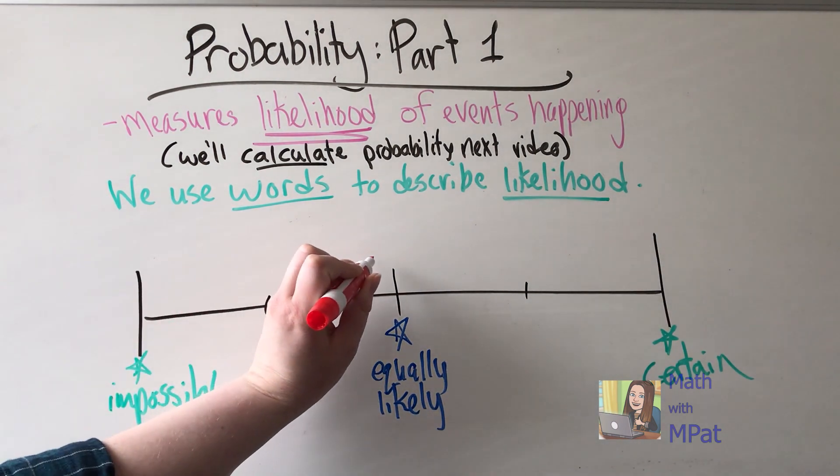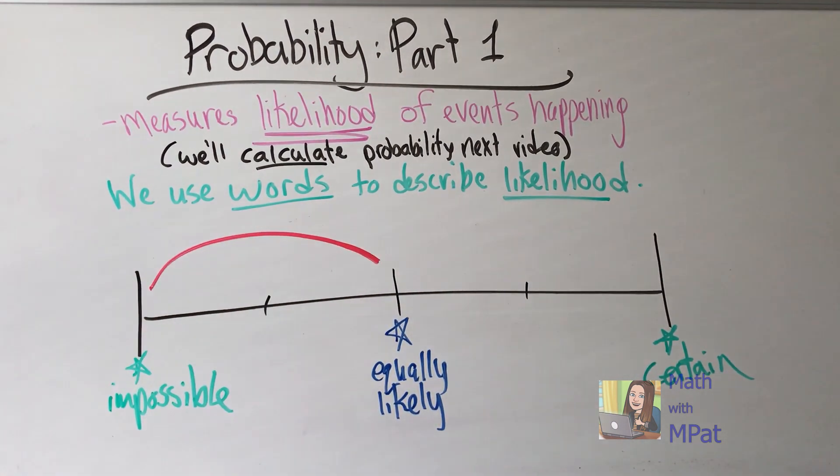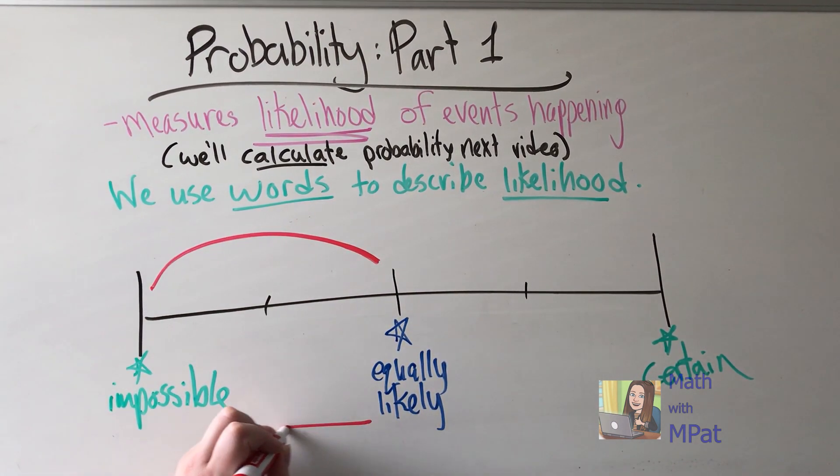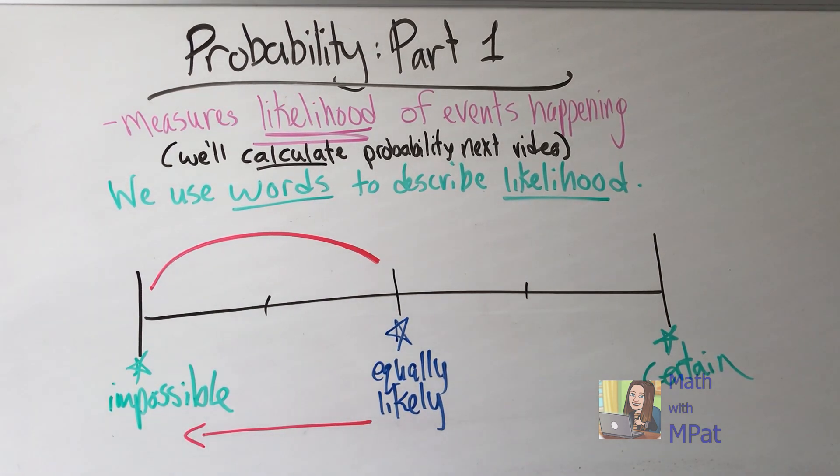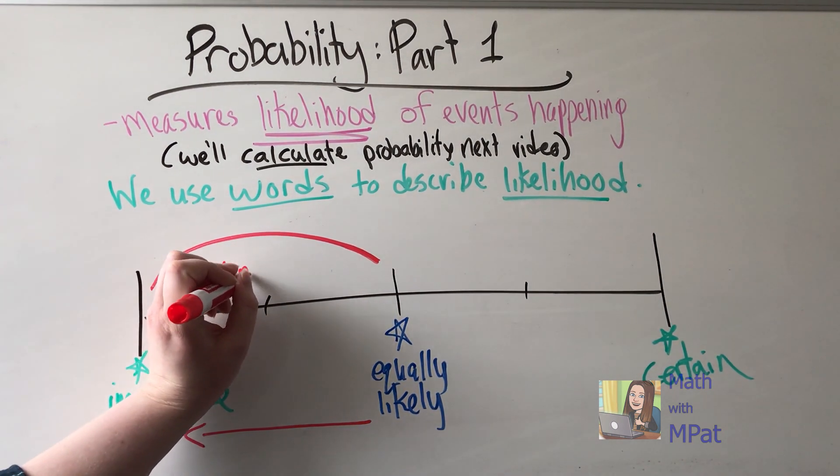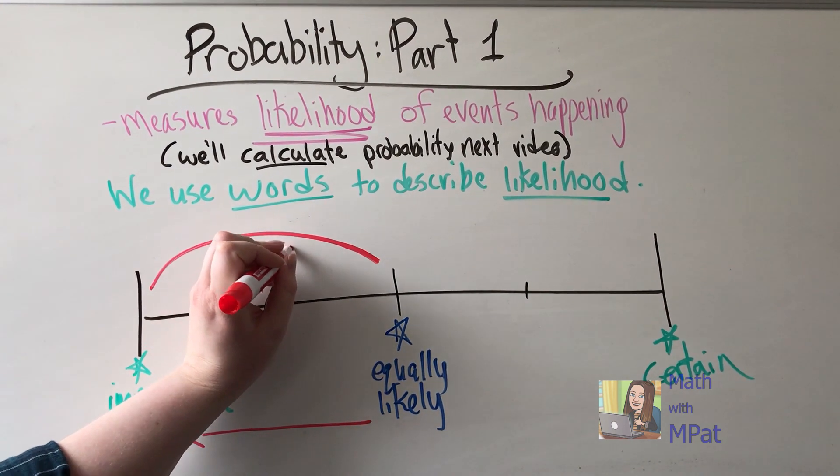Now on this half of our spectrum, moving from equally likely towards impossible, as I get closer to impossible, events start to become less likely to happen. So we describe this as unlikely.